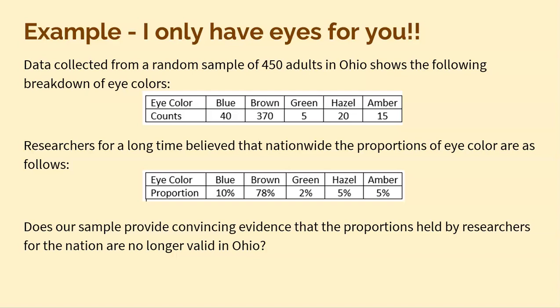Basically, does our observed data — the 40, the 370, the 5, the 20, the 15 — give us evidence that in Ohio we do not follow the distribution that's supposedly true for the nation?